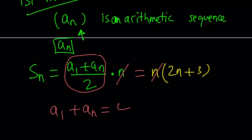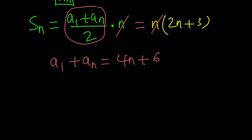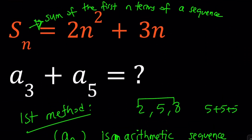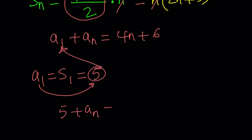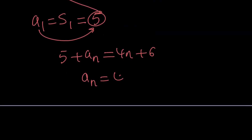After dividing and multiplying by 2, a sub 1 plus a sub n becomes 4n plus 6. There are two unknowns, but we can find a sub 1, because a sub 1 is the same as S sub 1 — the sum of the first term is just the first term itself. Plugging n equals 1 into 2n squared plus 3n gives S sub 1 equals 5, so a sub 1 is 5. Substituting: 5 plus a sub n equals 4n plus 6, giving a sub n equals 4n plus 1.